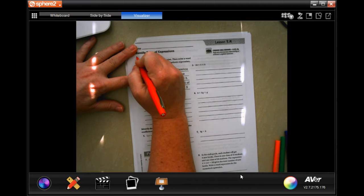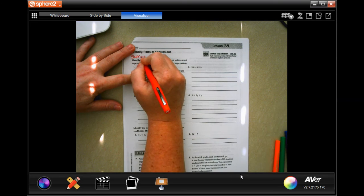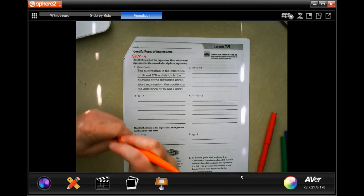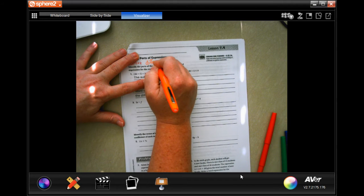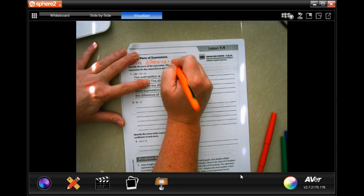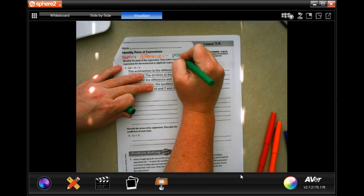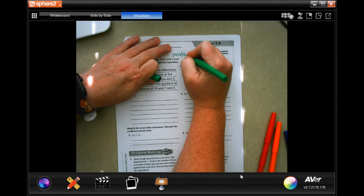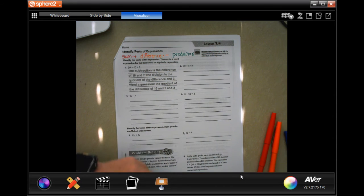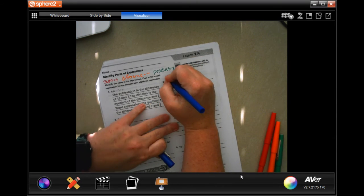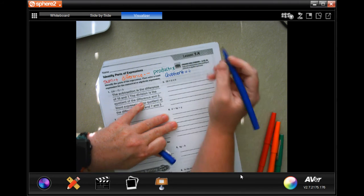When it says sum, we're talking about plus. When it's talking about difference, it's subtracting. Product is multiplication. And quotient is divide.